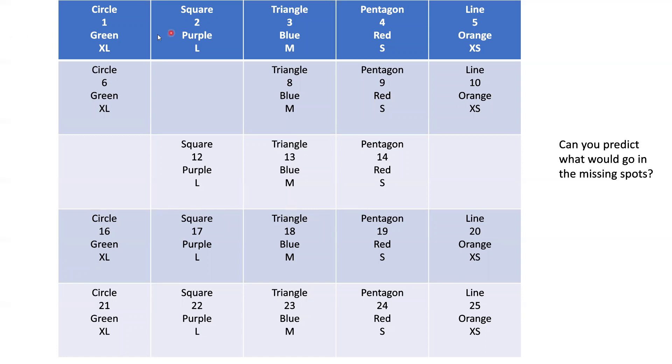You can see as we go through, the number is increasing: 1, 2, 3, 4, 5, 6 — and we're missing 8, 9, 10, 12, 13, 14. We're missing a couple.